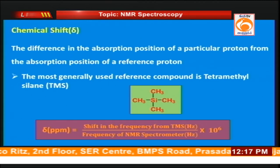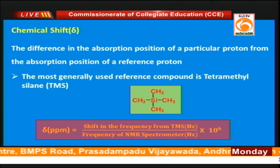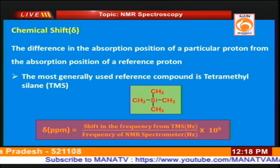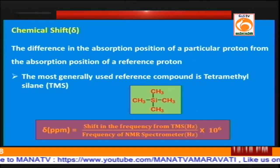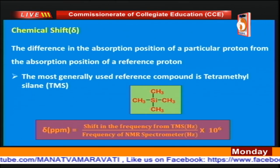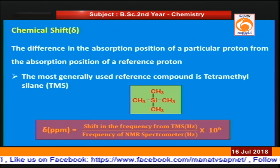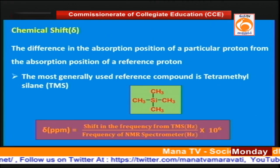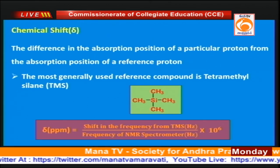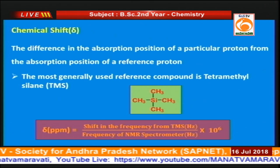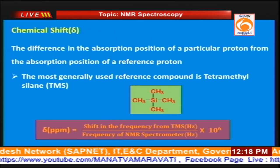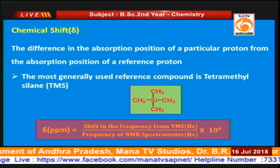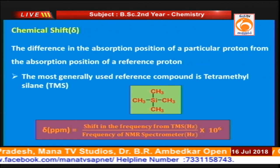The reference proton generally used in NMR experiments is TMS, that is tetramethylsilane. TMS has several advantages: it is soluble in most organic solvents and it has a low boiling point, so it can be separated easily from the sample once the spectrum is recorded. The chemical shift is indicated by δ and the units are generally given in ppm. Therefore, δ is a ratio defined as the shift in frequency from the TMS peak divided by the NMR spectrometer operating frequency, multiplied by 10⁶.